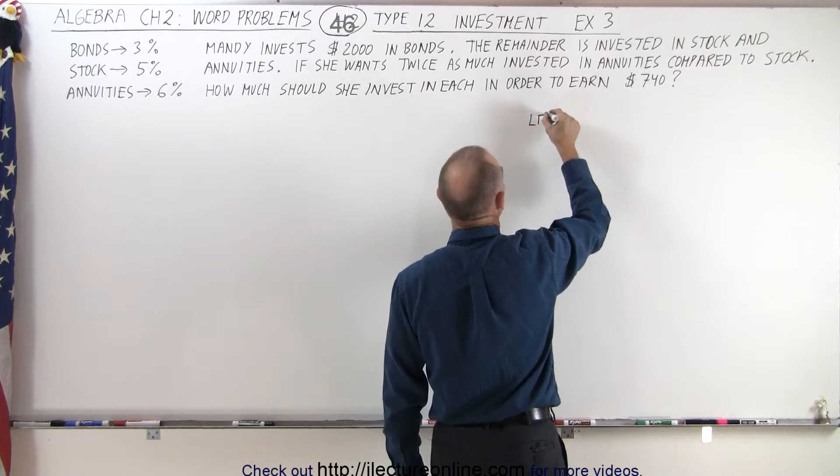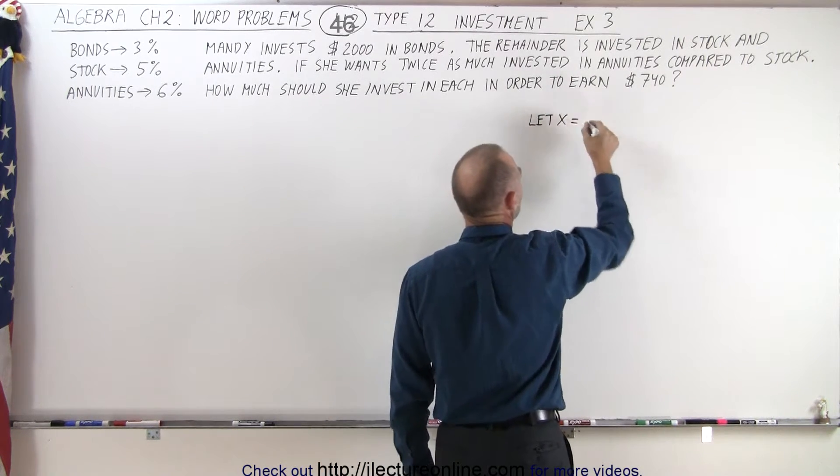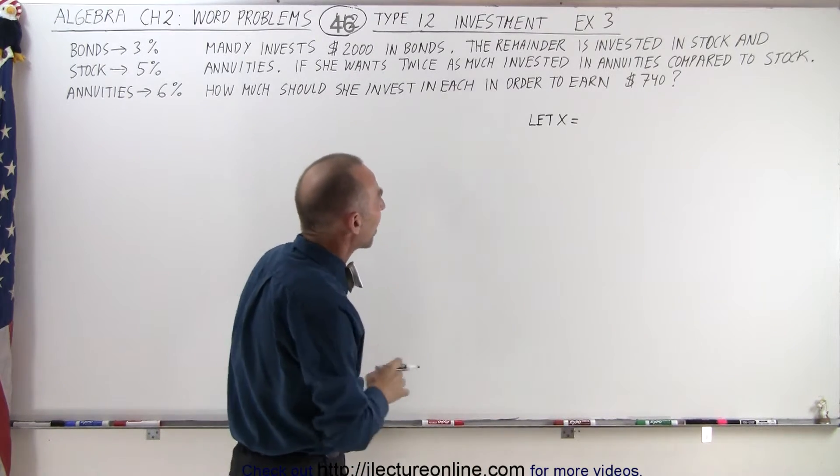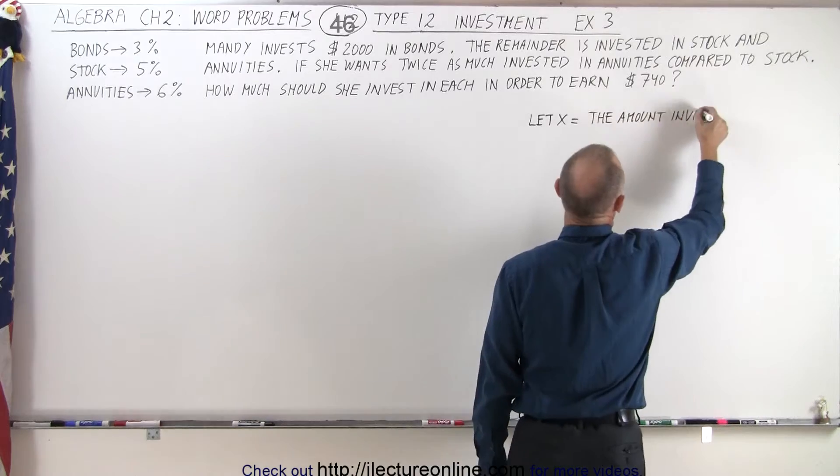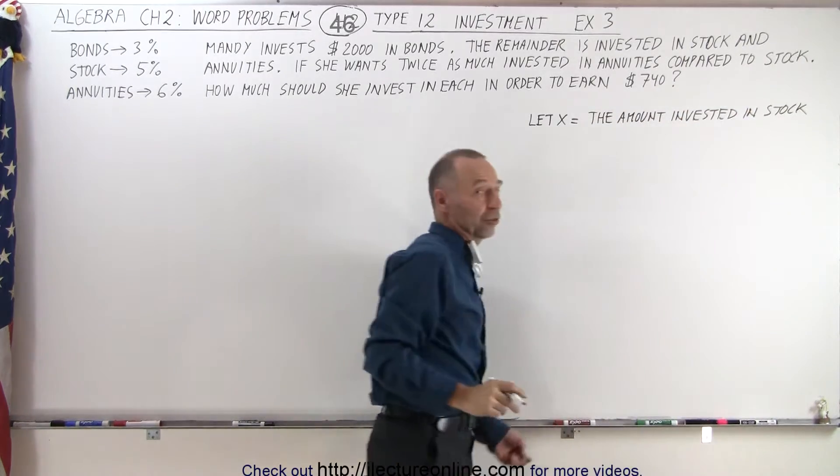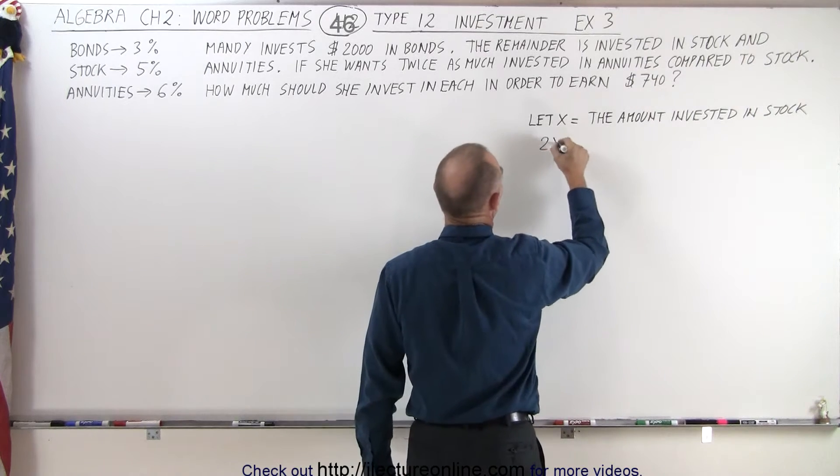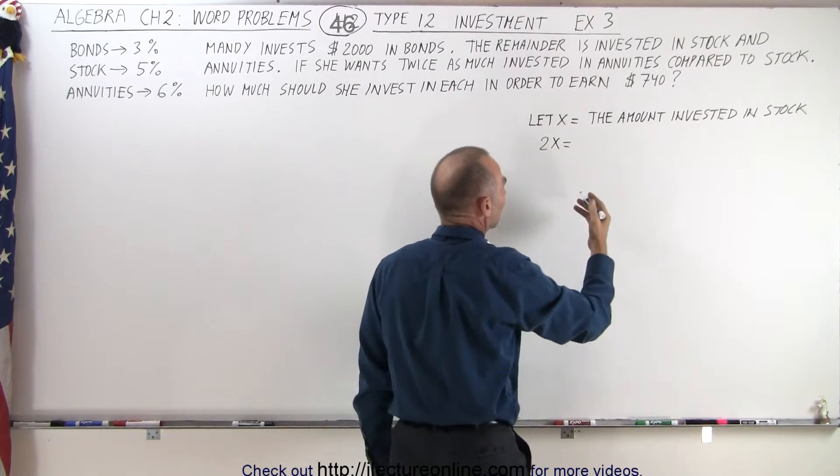So we're going to let X equal the amount of money invested in stock. And then of course, since she wants twice as much invested in annuities, then 2X will equal the amount invested in annuities.